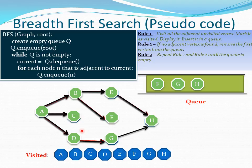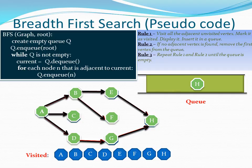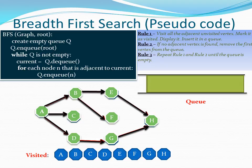F doesn't have any adjacent vertex, so we remove it as well. G has one adjacent vertex but it has already been visited, so we don't need to insert it into the queue again — we remove G from the queue. Finally, the last vertex in the queue doesn't have any adjacent vertex either, so we dequeue it as well and it is automatically removed. Now the queue is empty and we have completed the full iteration, having visited all the vertices.